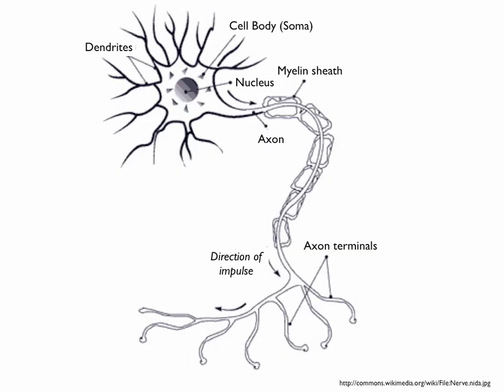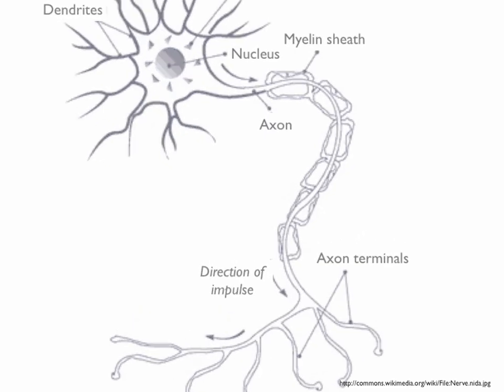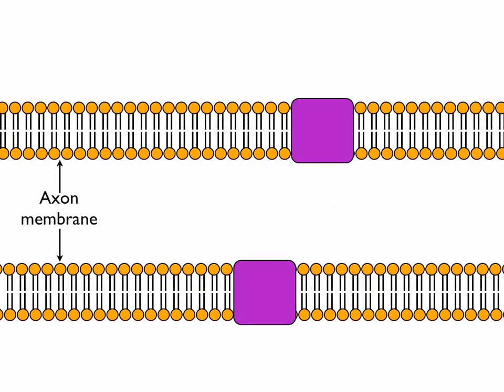This is the structure of a myelinated neuron, and if we look closer at the axon, we can see that when the neuron is at rest, there is a higher concentration of sodium ions outside the cell compared with the concentration inside, and it's vice versa for potassium.